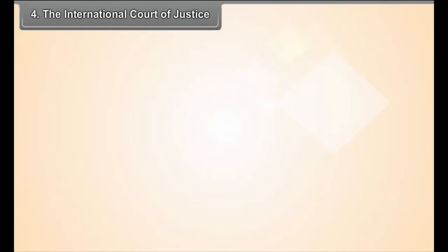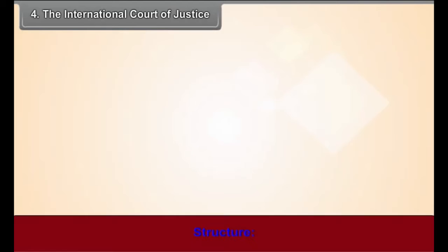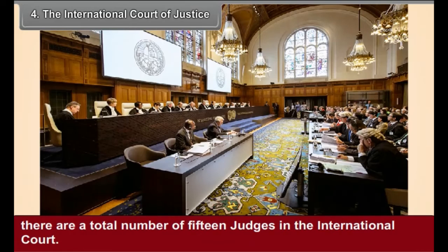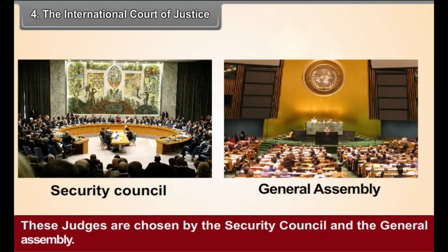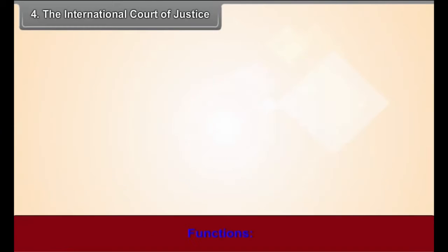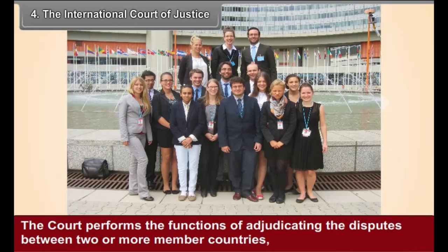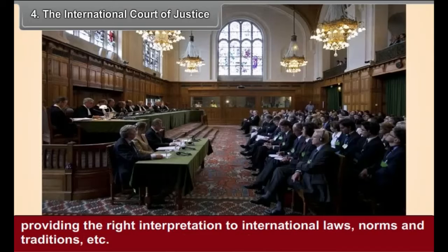The International Court of Justice - Structure: There are a total number of 15 judges in the International Court. These judges are chosen by the Security Council and the General Assembly. Functions: The Court performs the functions of adjudicating the disputes between two or more member countries, and providing the right interpretation to international laws, norms, and traditions.